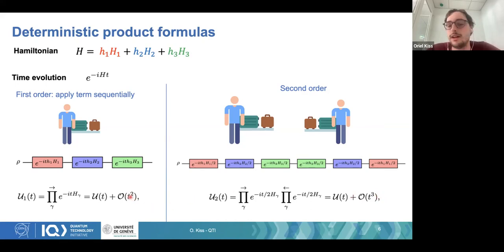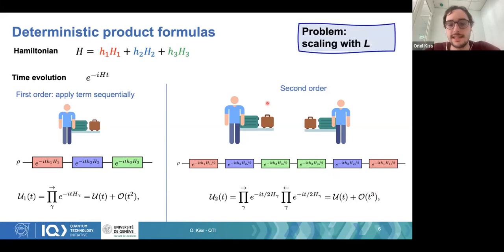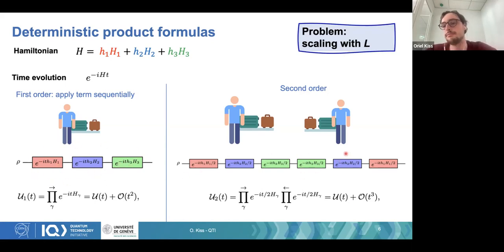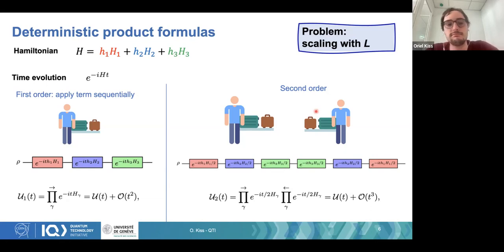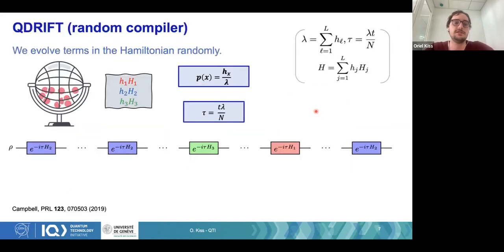If T is small, higher-order formulas get better and better. The main drawback is that the number of terms scales with L — the number of Hamiltonian terms — so for Hamiltonians with many terms, like in chemistry or nuclear physics, it becomes a limiting factor. We want methods that don't depend explicitly on L. And the way to do this is using QDrift, a random compiler proposed by Campbell, where you build your circuit randomly.